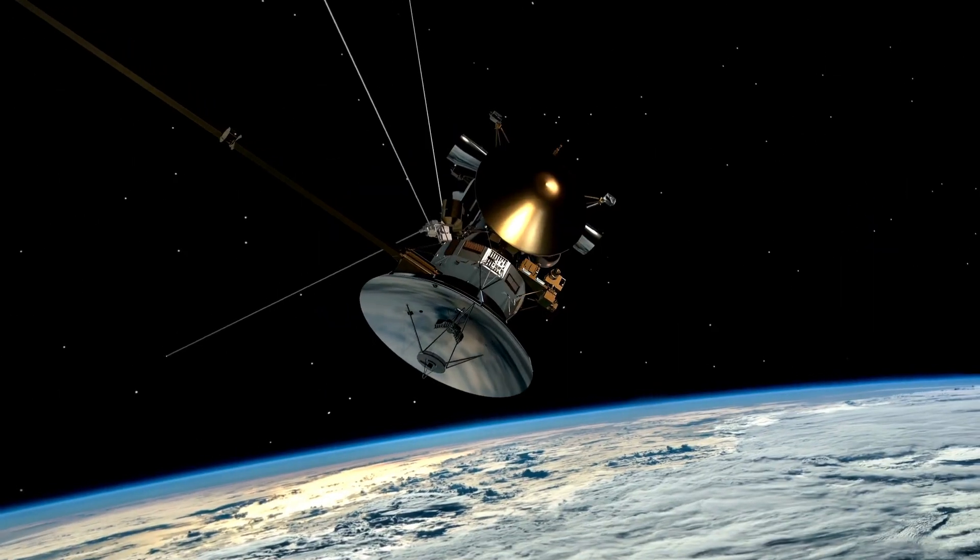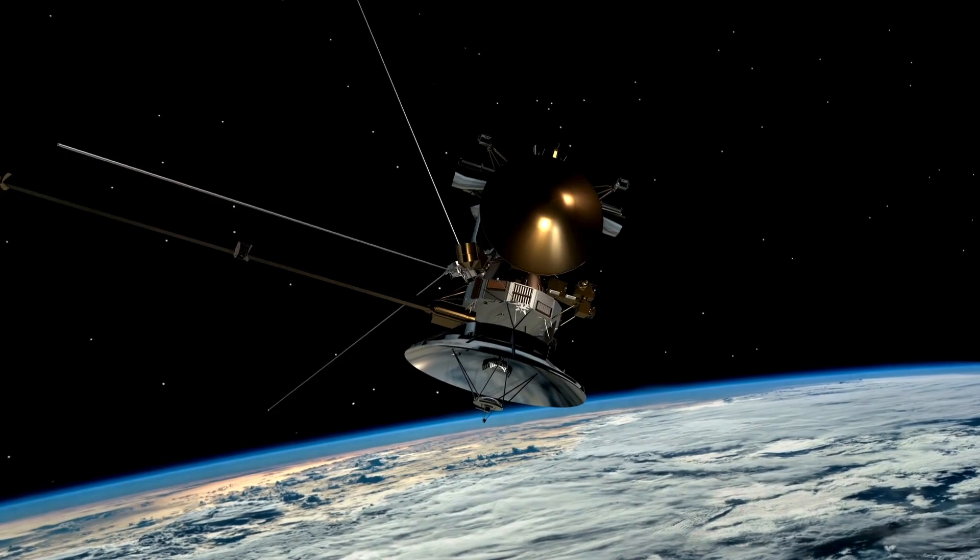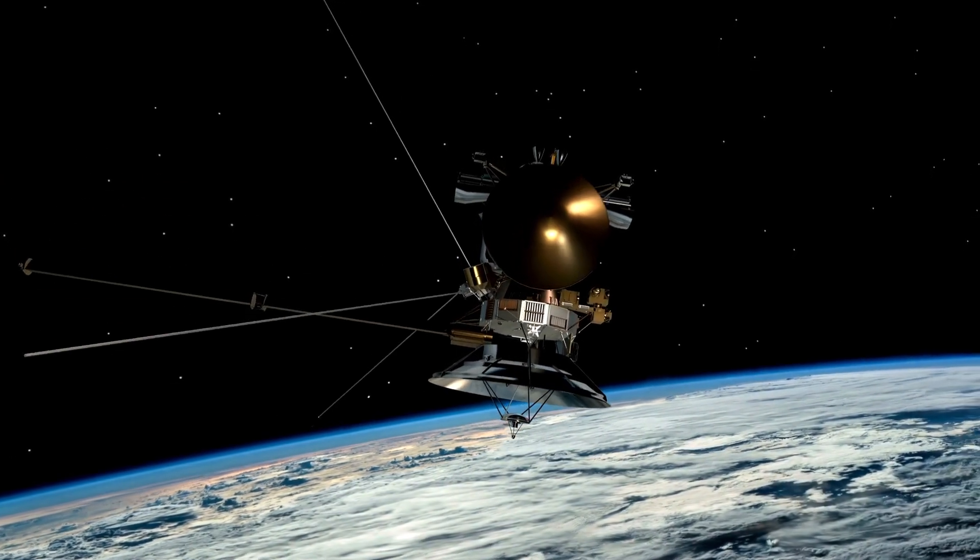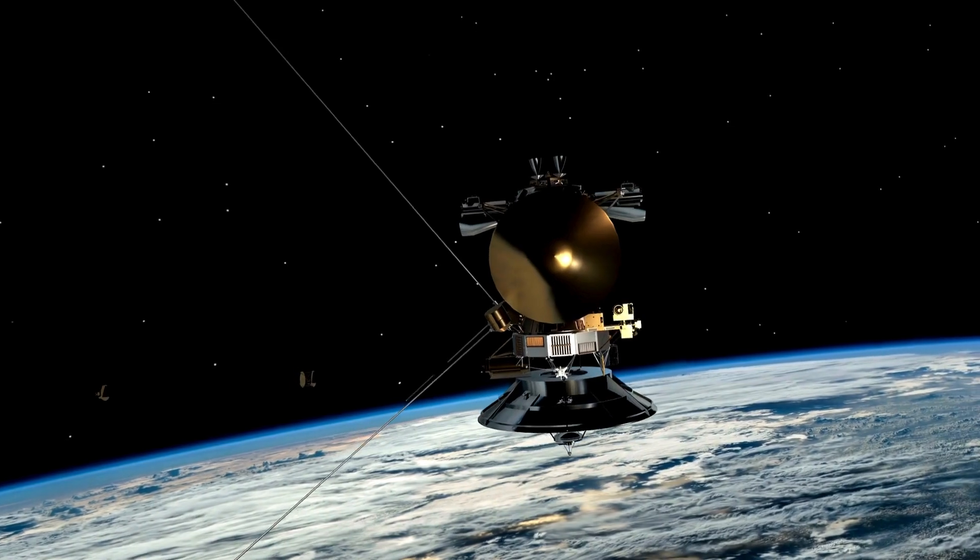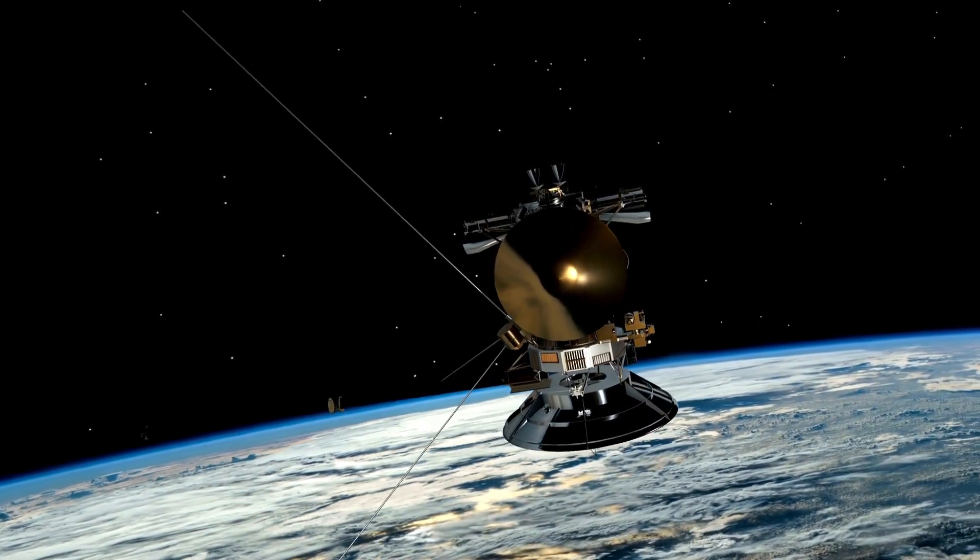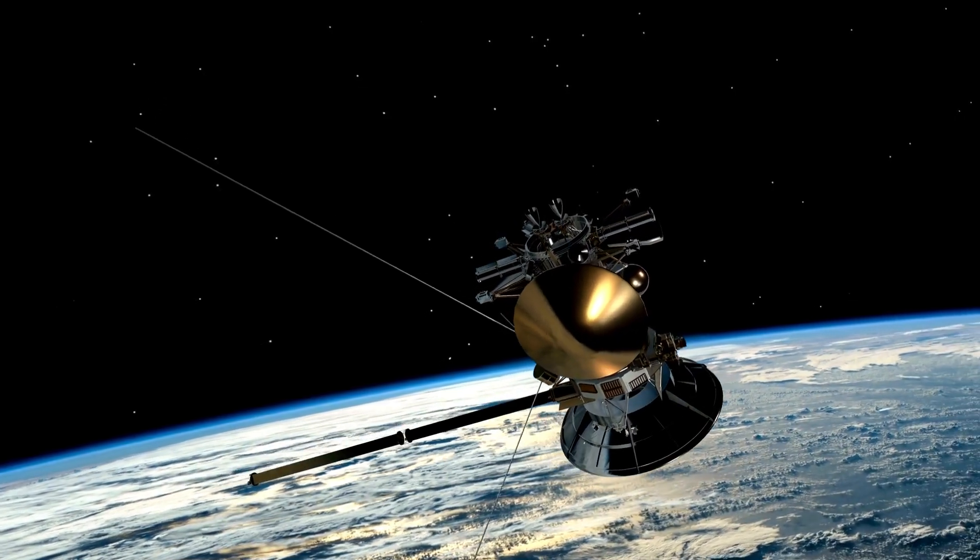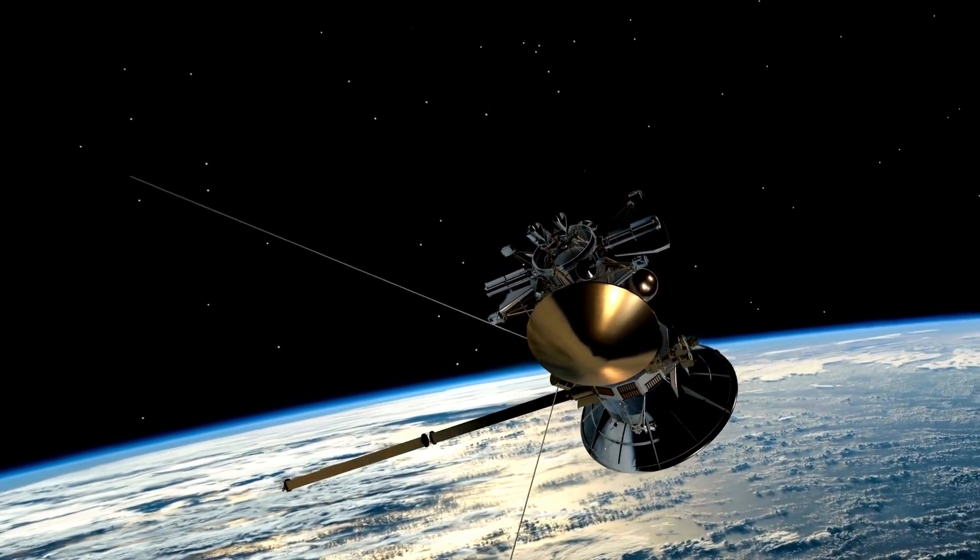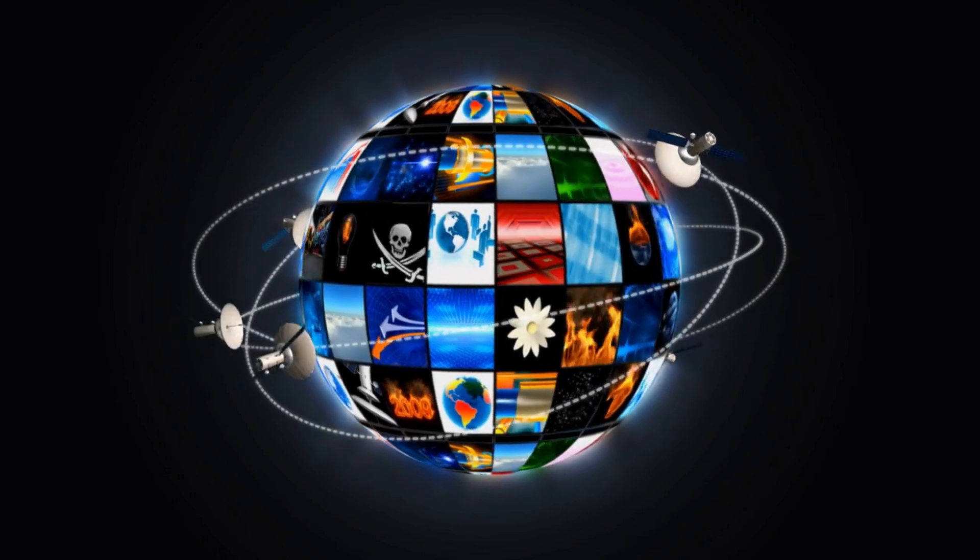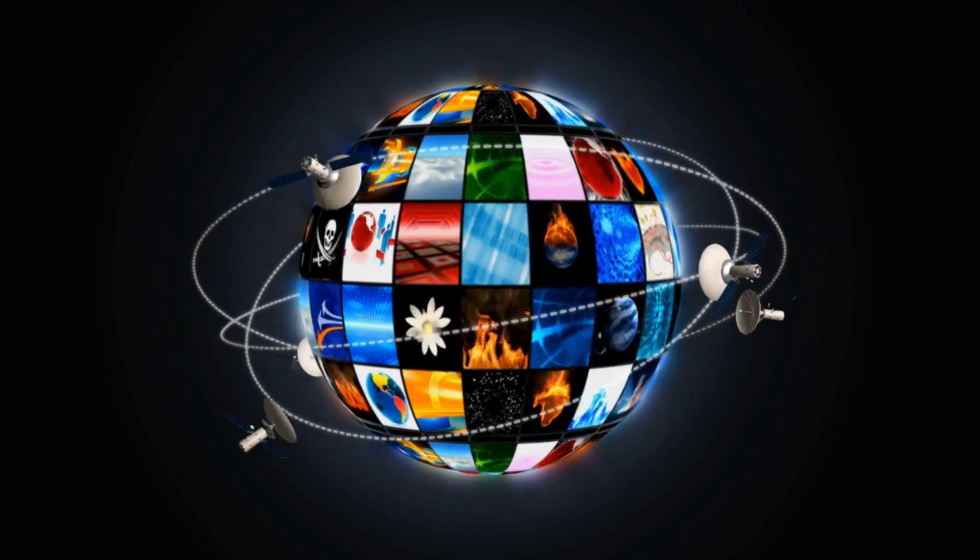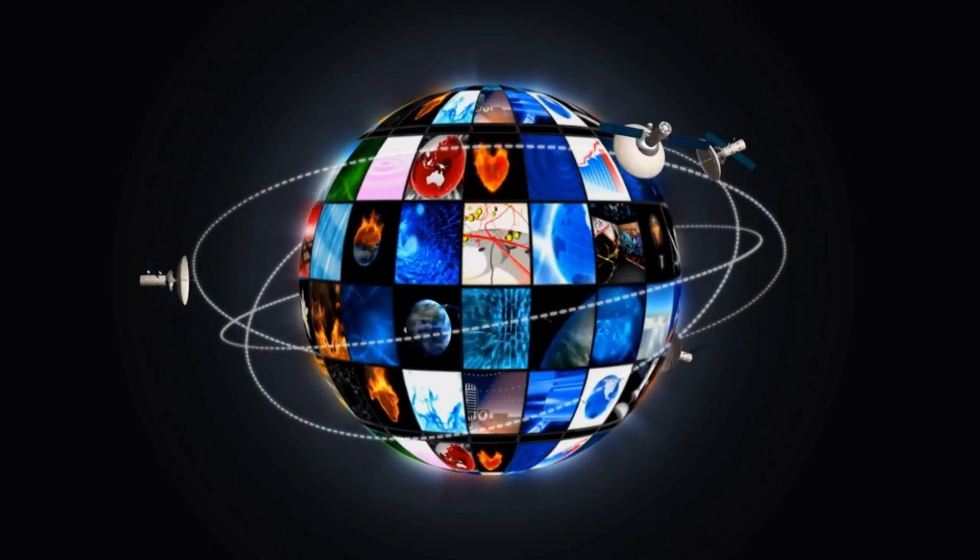When satellites pass through the SAA, they're exposed to much higher levels of these energetic particles from space. Like running a cosmic gauntlet or something. Kind of, yeah. It can cause all sorts of problems. Malfunctions. Scramble data. Sometimes even permanent damage to their electronics. So what do satellite operators do? Just cross their fingers? No. Not quite. They often have to power down non-essential systems when they know a satellite's about to pass through the SAA. Just to minimize the risk.